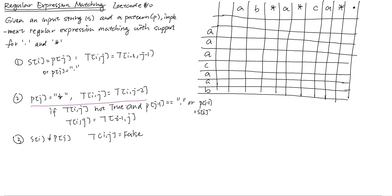Let's look at an example of how to fill in a table. We have string 'aaacaa' and pattern 'ab*a*ca*.' I already wrote down three rules to fill in this table. The first entry (0,0) should always be true as the base case — it means both string and pattern are empty, so the algorithm returns true. For the first column, the pattern is empty but string is not, so it will always return false.